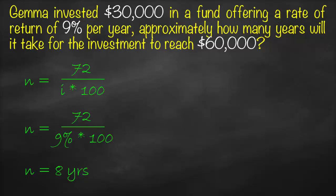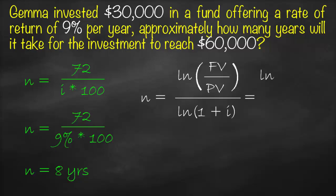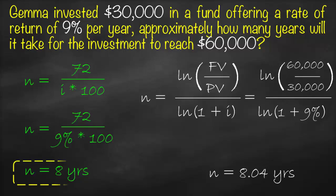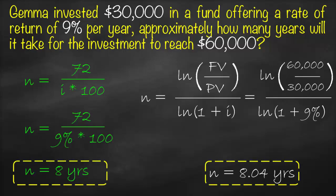We can also use the accurate LN formula. n equals LN(60,000 divided by 30,000) divided by LN(1 plus 9%), which gives n equal to 8.04 years. This is the accurate number of years. As you can see, the Rule of 72 and the LN formula give very close results.